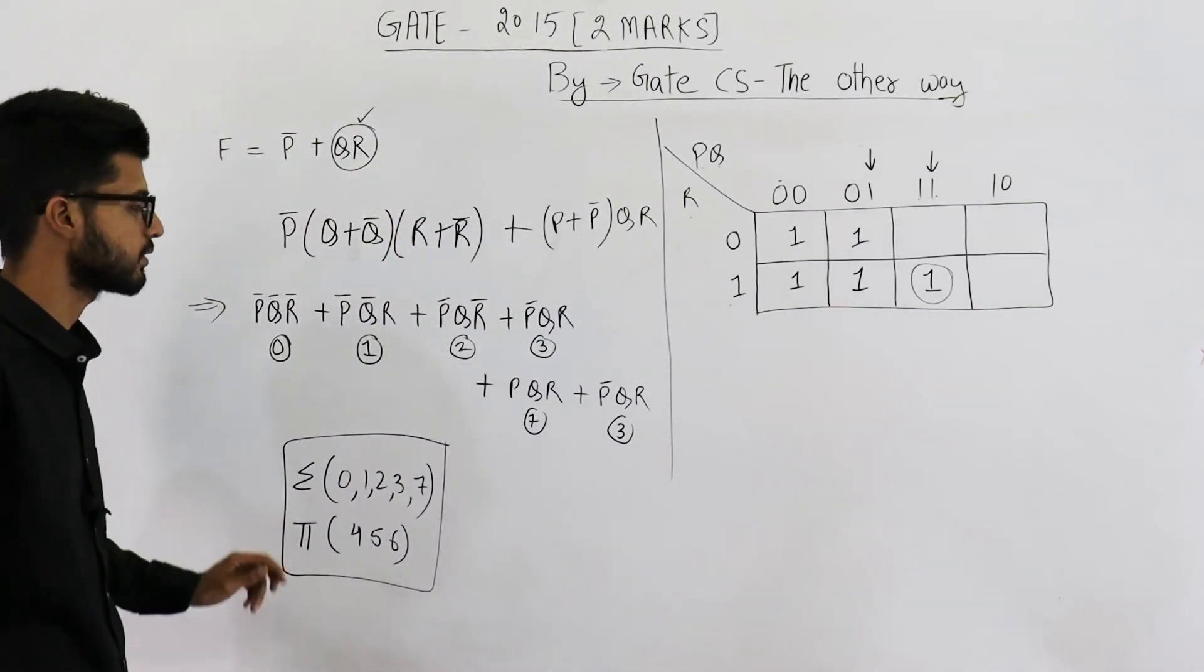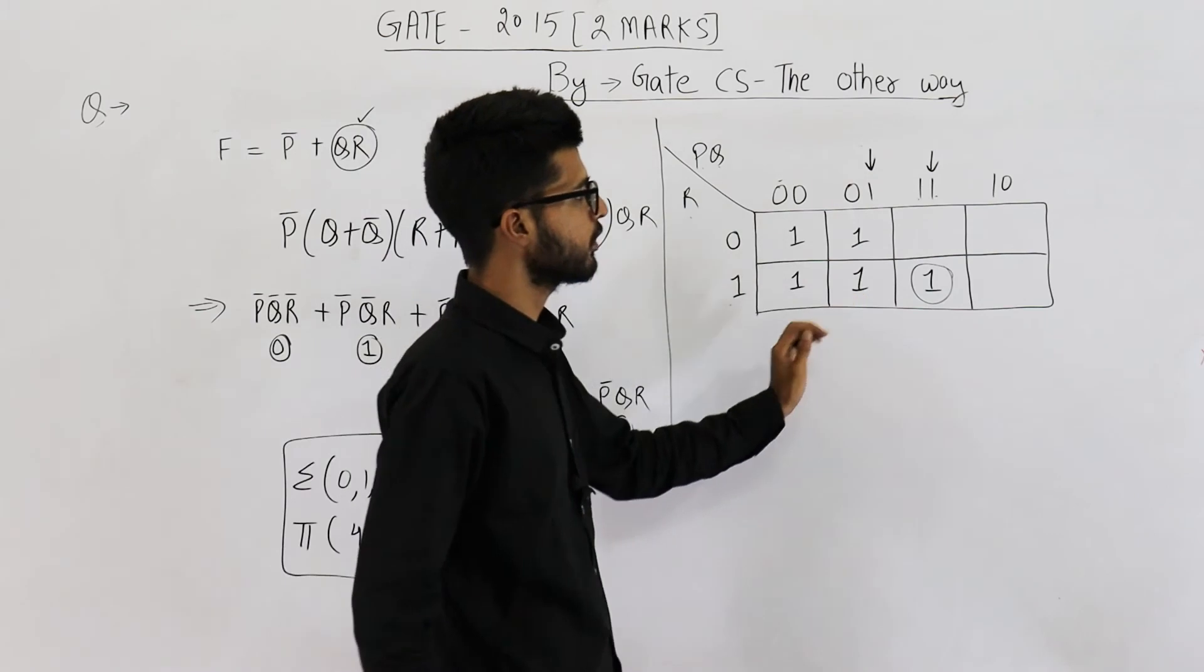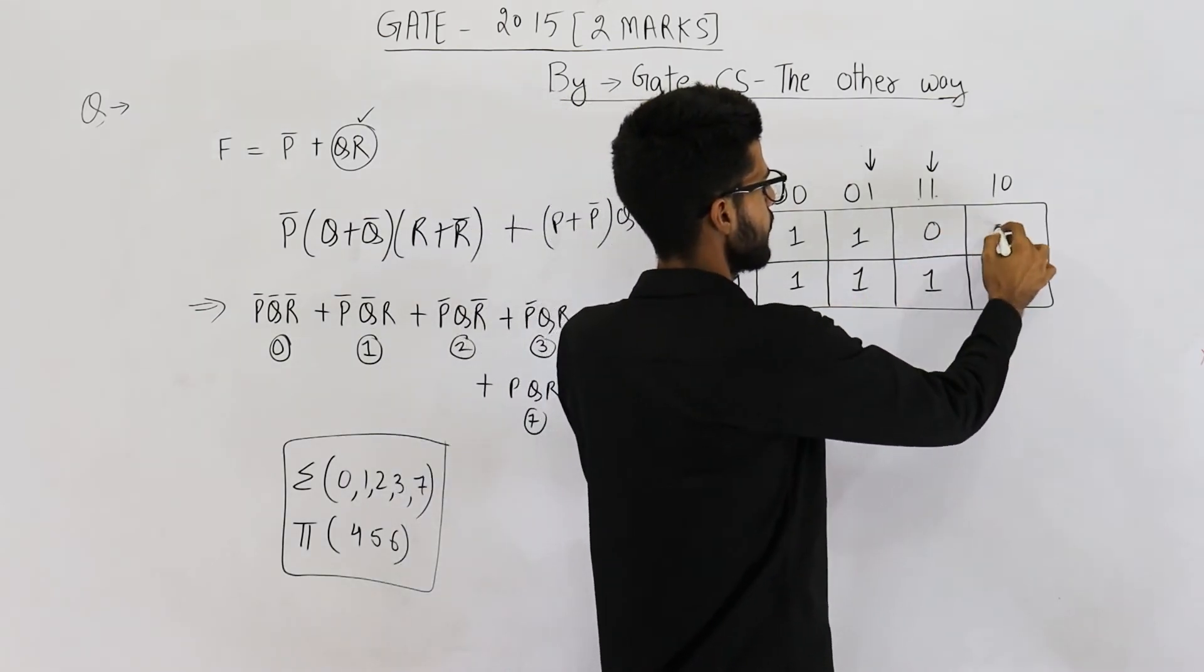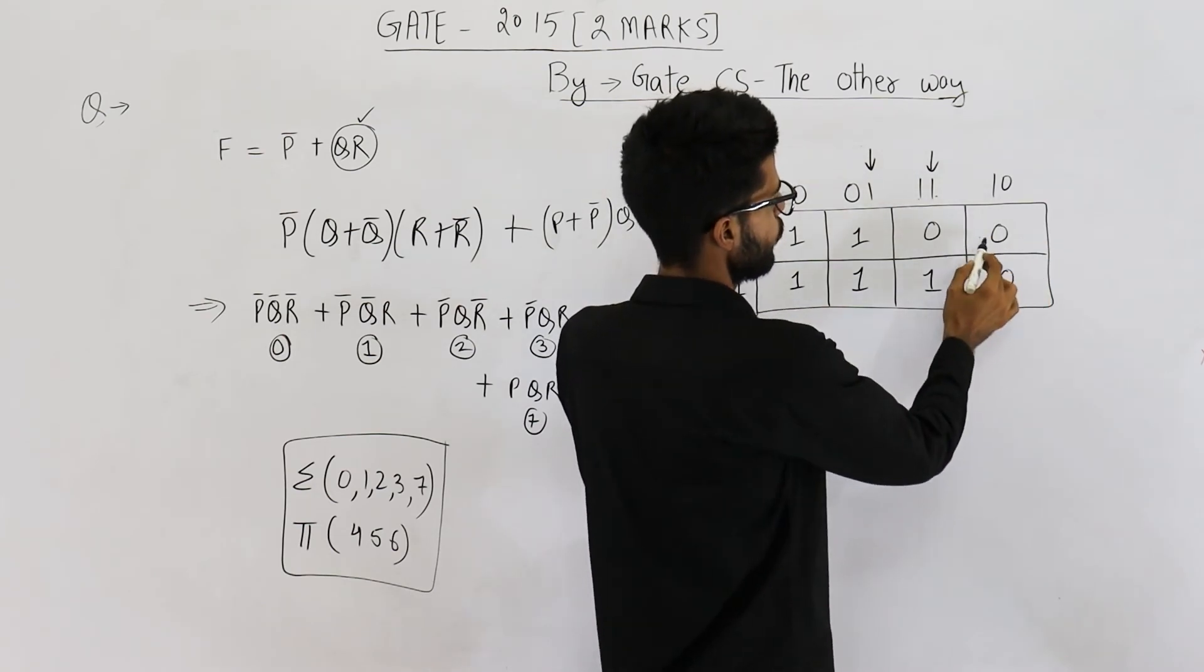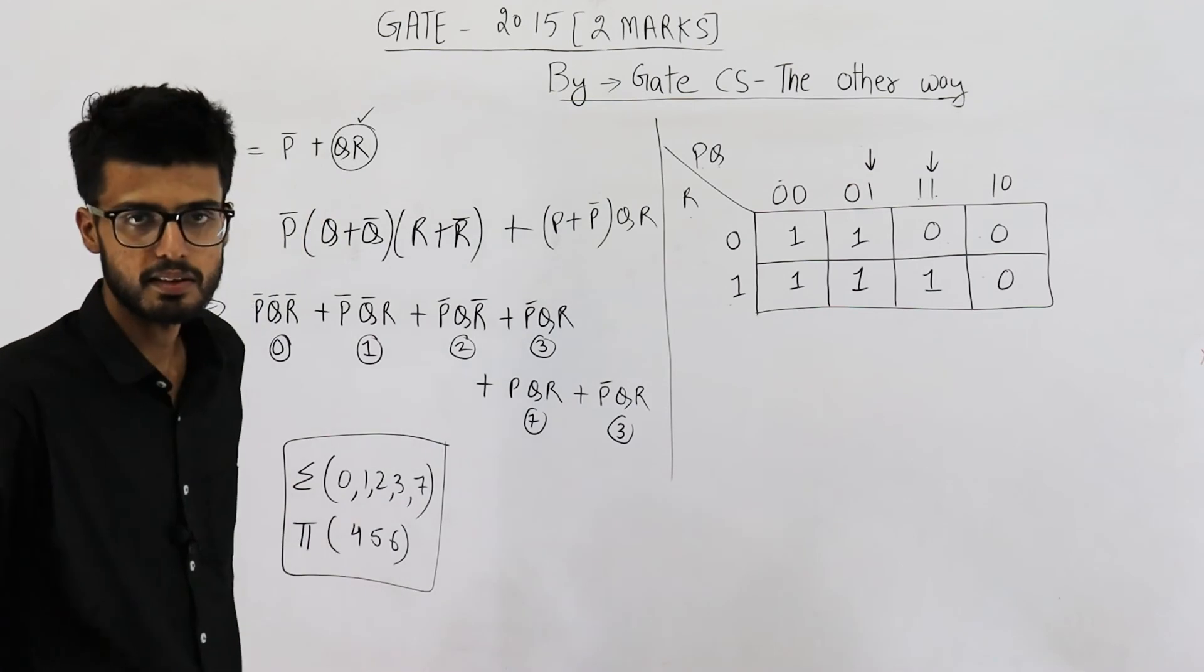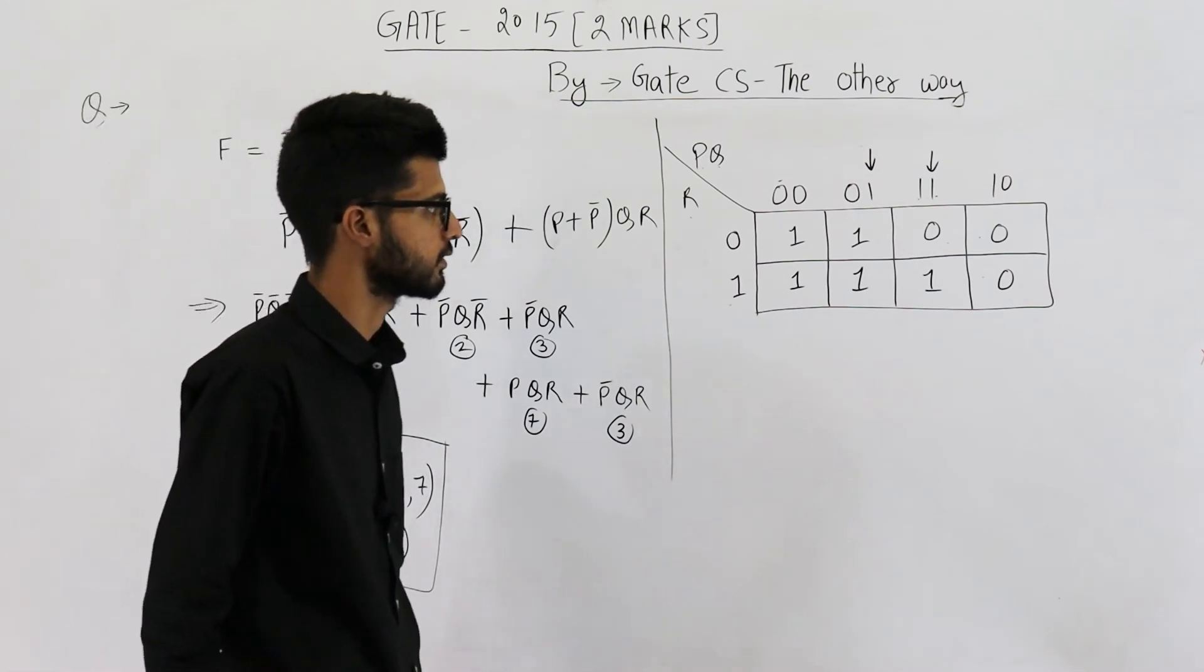Similarly, for finding out the maxterms, except for these cells, all other cells will be 0. That means these 3 cells contain 0. So they are 4, 5 and 6. So the maxterms are 4, 5 and 6. So this is your answer.